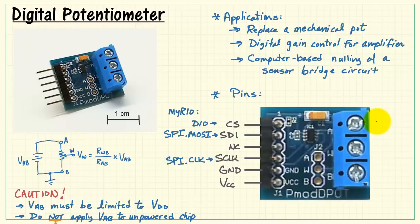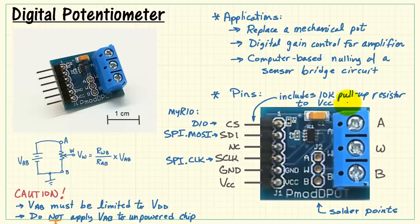These three pins, the A, the B, and the wiper, are located on the screw terminal connector and are also available as solder points on the board. You can take your pick, whichever one is more convenient. The chip select line also includes a 10k pull-up resistor to VCC.